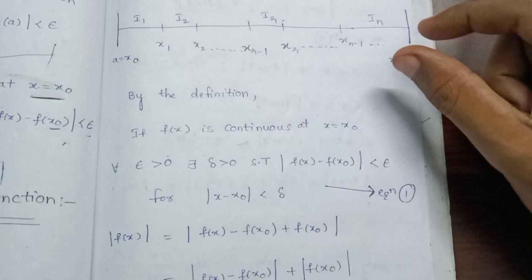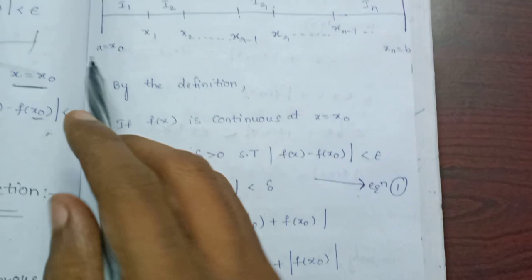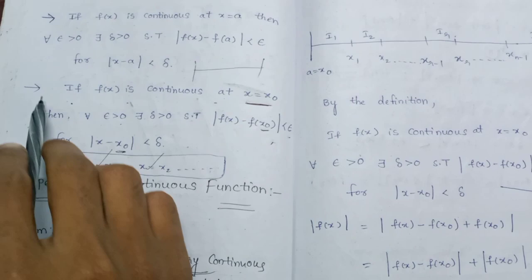I will explain the point. We will check every continuous function is bounded. We will check out x0, x1, x2, and so on up to xn. We will check every continuous function. If f of x is continuous at x equal to x0, this is the project.